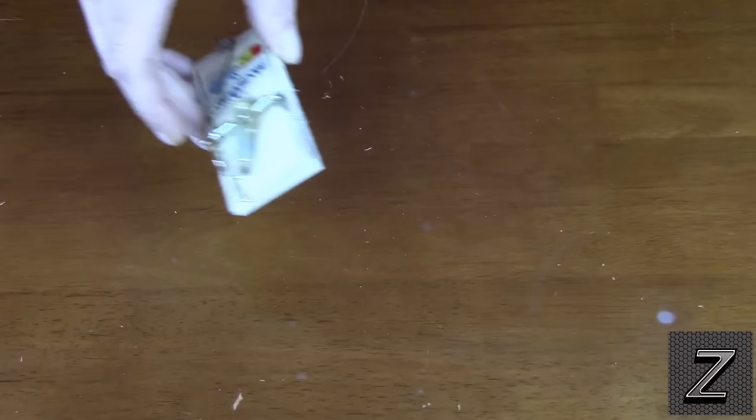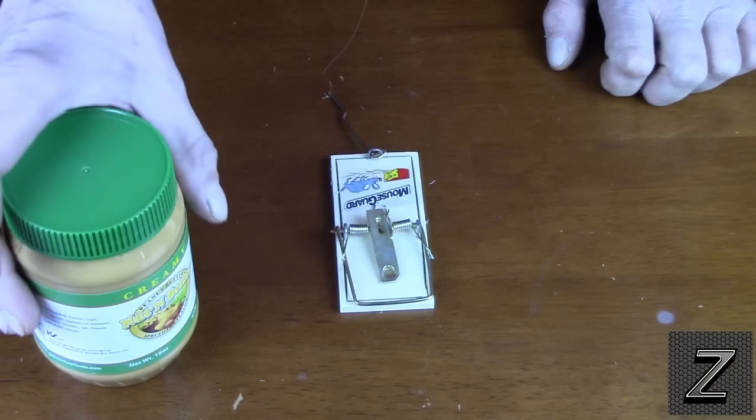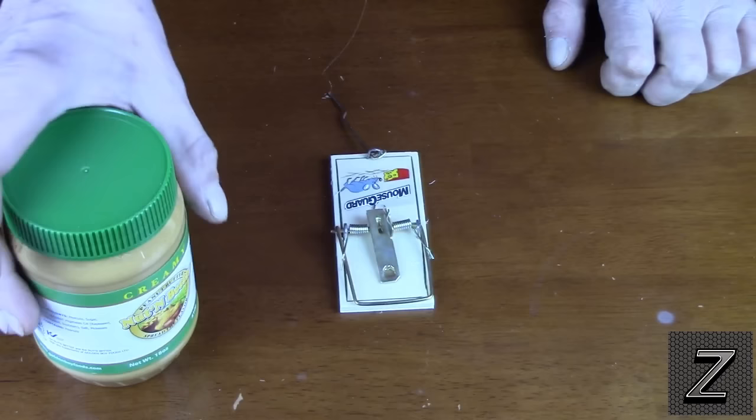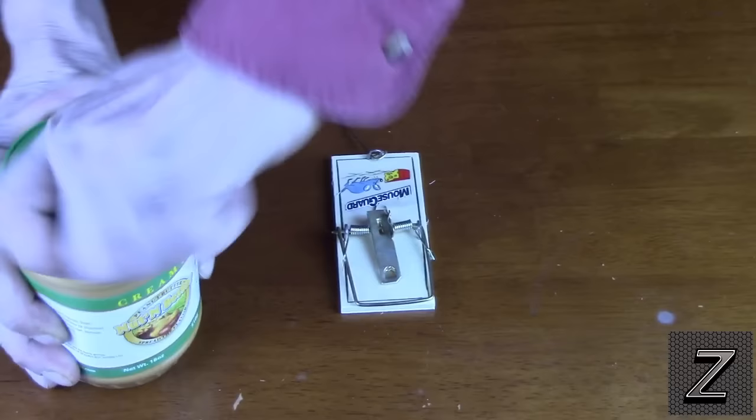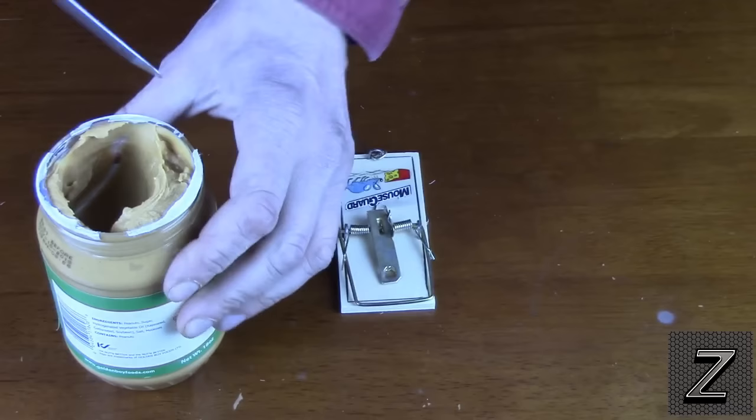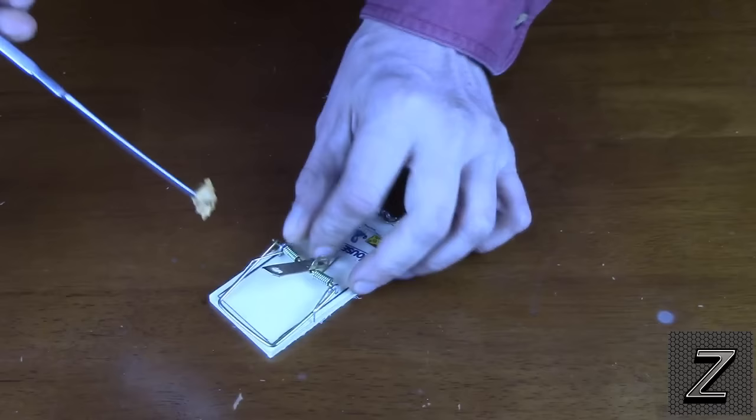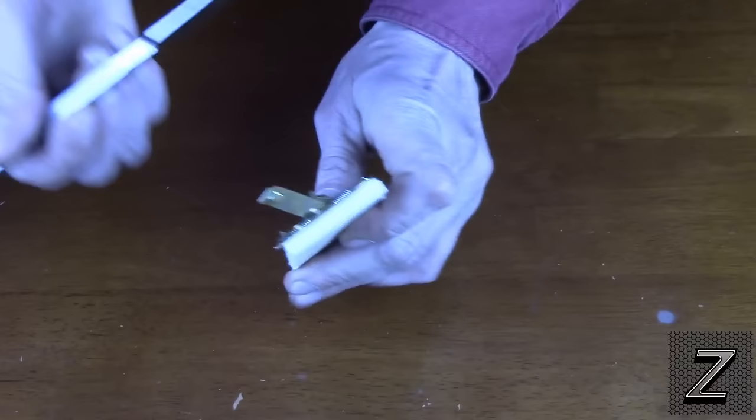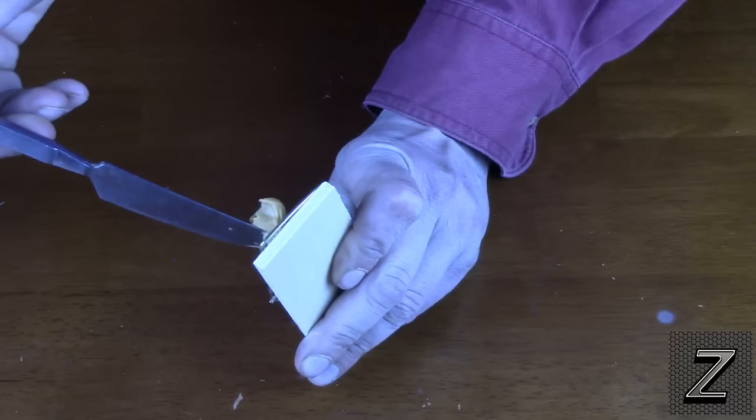For the first one we are going to use the peanut butter. Now like I said, I don't really recommend using peanut butter, but in some cases you might not be able to do the other two methods. So I am going to show you a trick, if you do have to use peanut butter, this will increase your odds. Instead of smearing it on the top, take and smear it on the underside just like that.